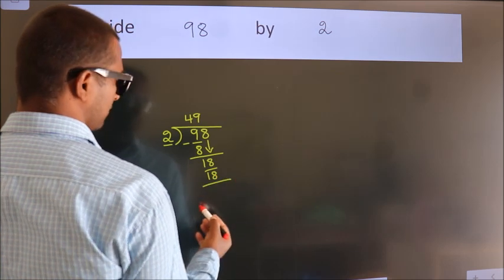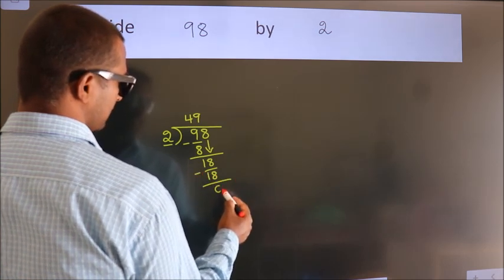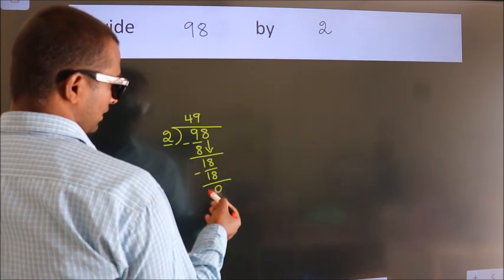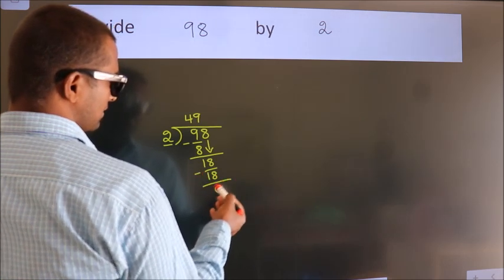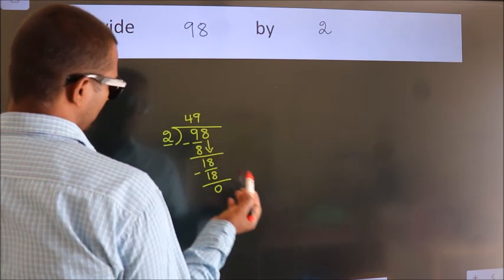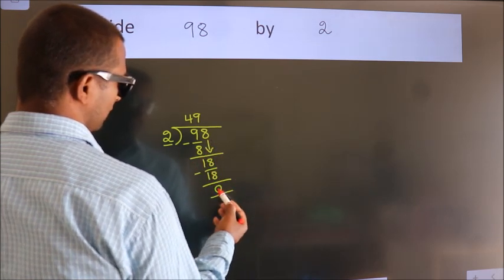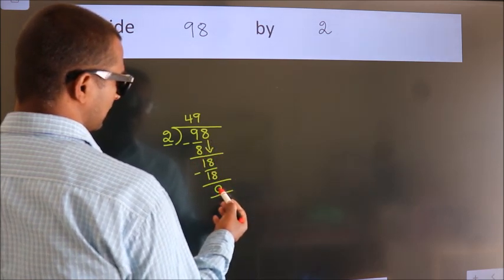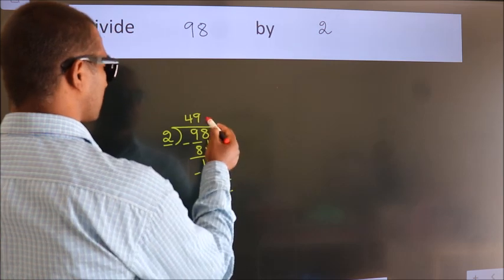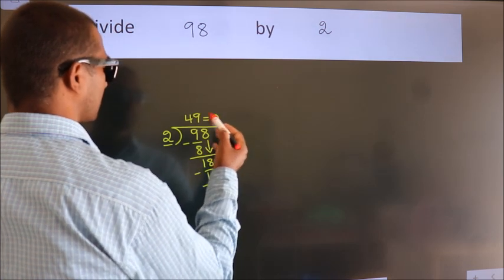Now we subtract, we get 0. After this, no more numbers to bring down and we got remainder 0. So this is our quotient.